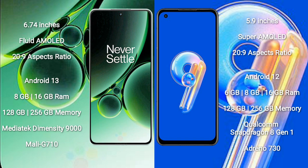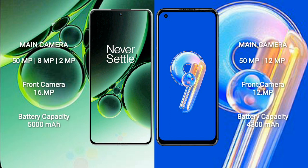OnePlus Nord 3 comes with 8GB or 16GB RAM and 128GB or 256GB internal storage, with a MediaTek Dimensity 9000 processor and Mali G710 GPU. Asus Zenfone 9 comes with 6GB, 8GB, or 16GB RAM and 128GB, 256GB, or 512GB internal storage, with a Qualcomm Snapdragon 8 Gen 1 processor and Adreno 730 GPU.